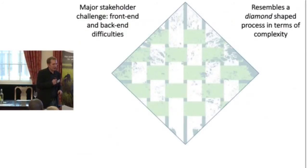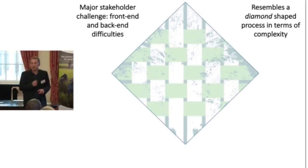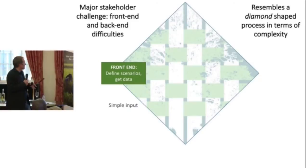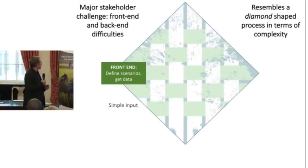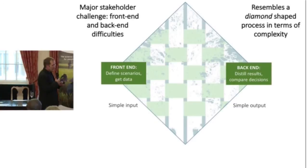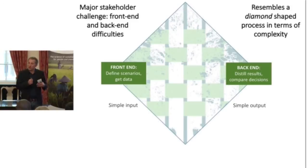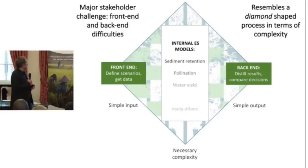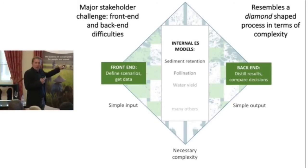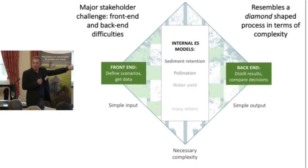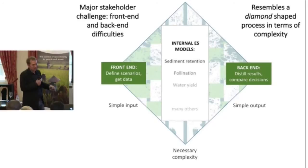The MESH process resembles a diamond shape in terms of complexity: relatively simple front-end inputs — such as scenarios like increasing irrigation area by 100 square kilometers — and relatively simple back-end outputs useful for decision making, but a complex internal process of multiple ecosystem service interactions. The MESH model focuses on a user-friendly front end, a user-friendly back end, and a model that handles the internal complexity — letting people decide which services they are interested in.